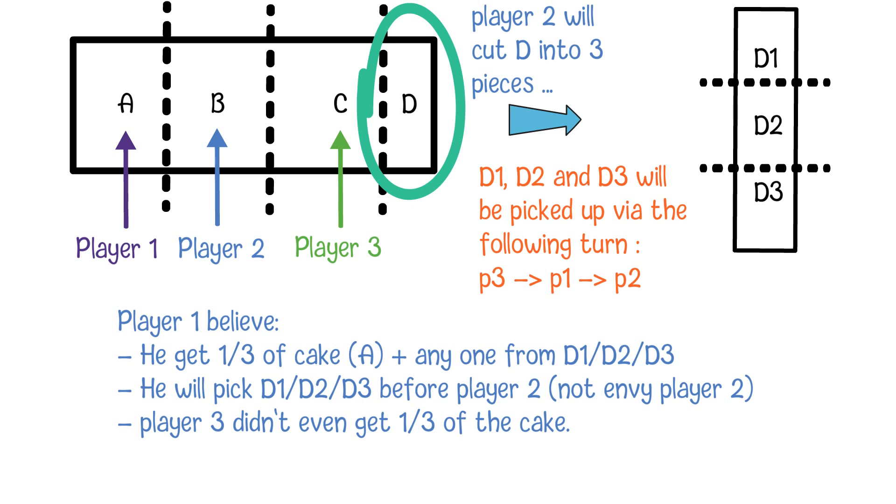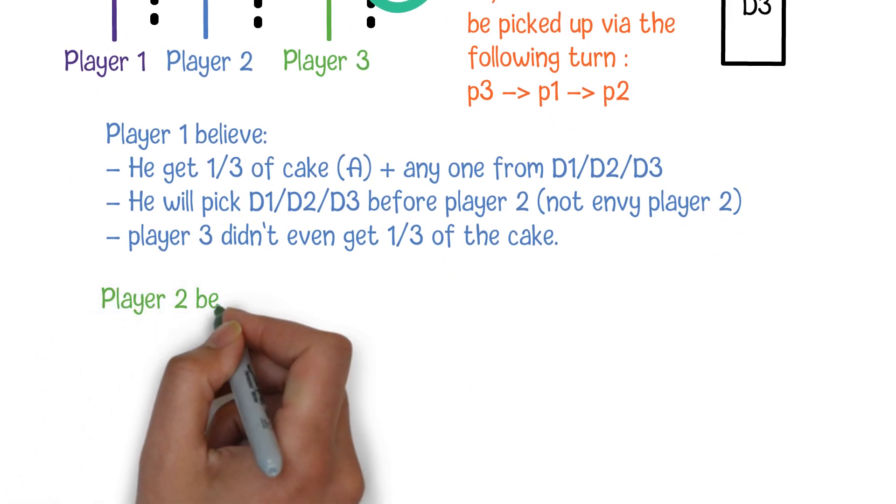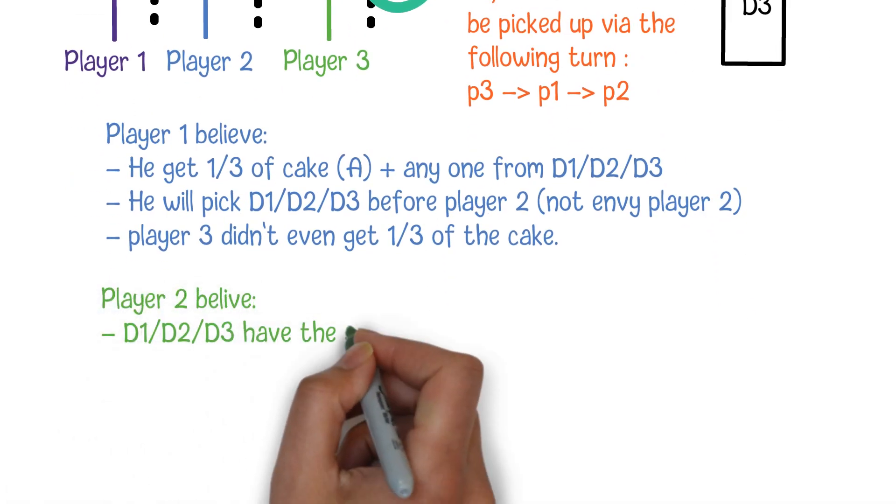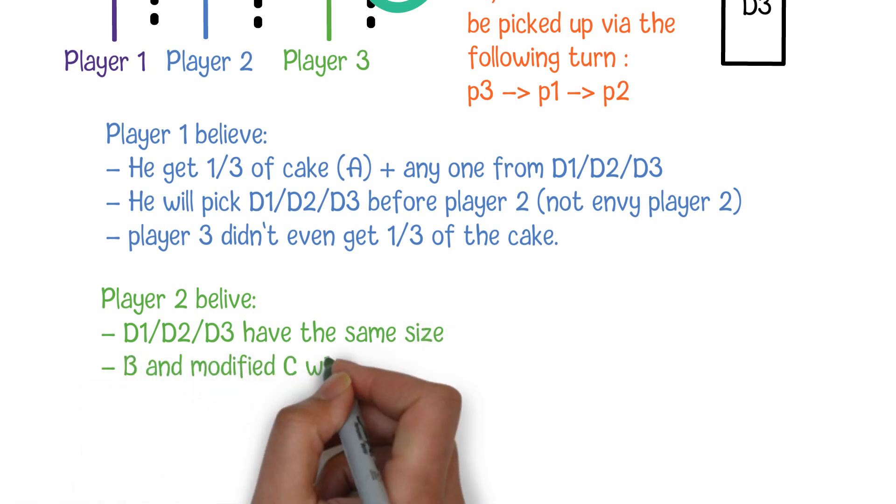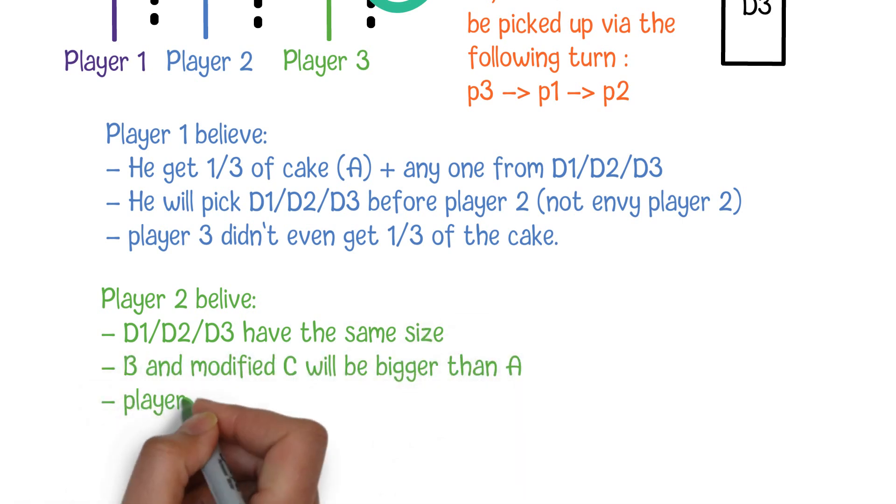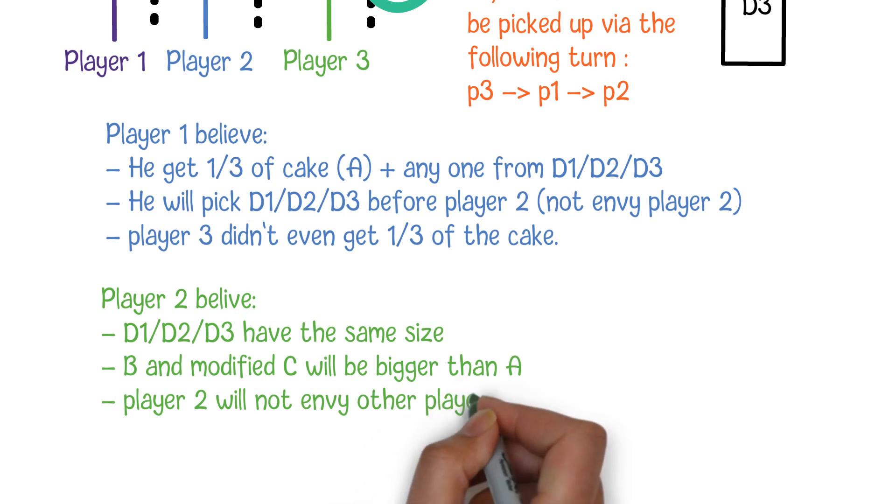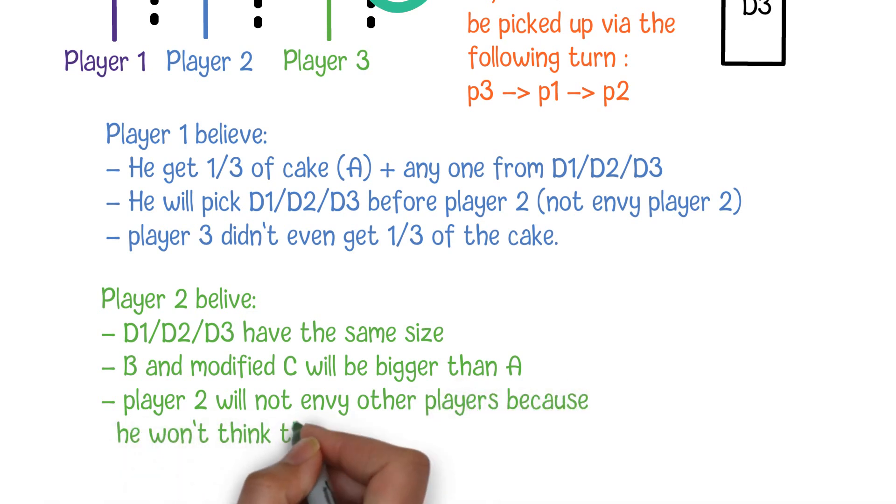For player 2, since he cut D evenly into D1, D2 and D3, he will finally get B plus one of those three pieces. From player 2's point of view, D1, D2 and D3 are the same. B and modified C will be bigger than A. So, player 2 will not envy other players because he won't think they will get more.